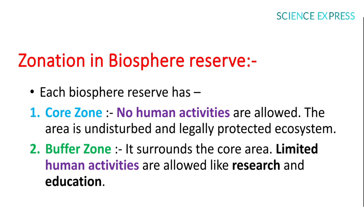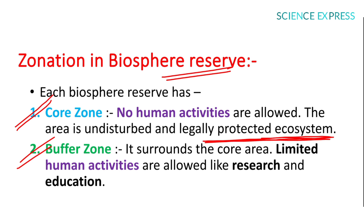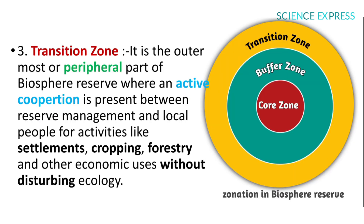Each biosphere reserve has three zones: core zone, buffer zone, and transition zone. In the core zone, no human activities are allowed — it is an undisturbed and legally protected ecosystem. The buffer zone surrounds the core area; limited human activities like research, education, and sometimes photography are allowed. The transition zone, also called the Manipulating zone, is the outermost part.